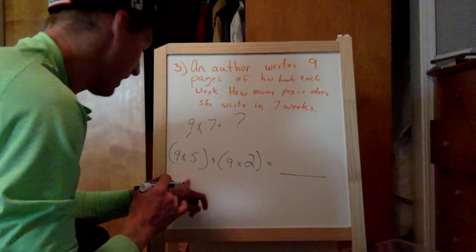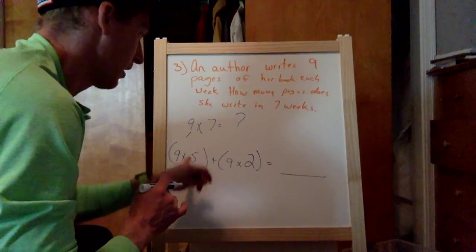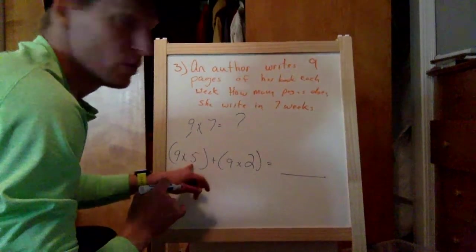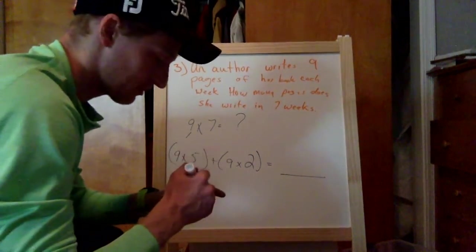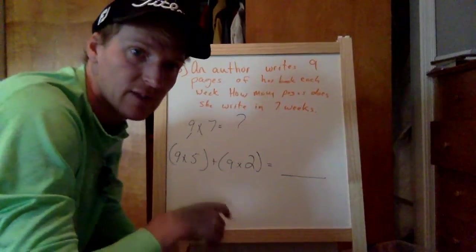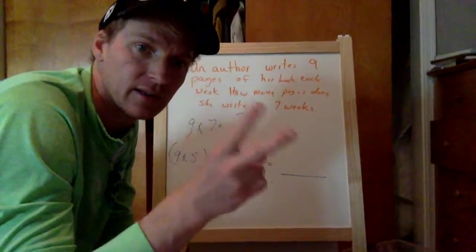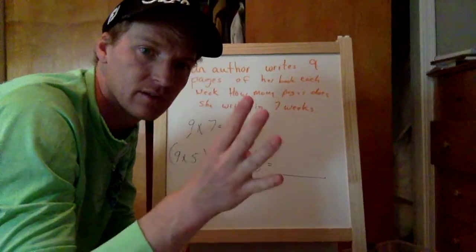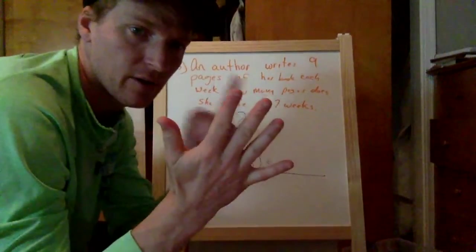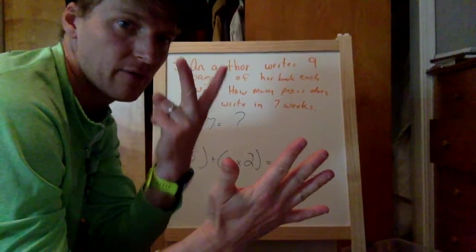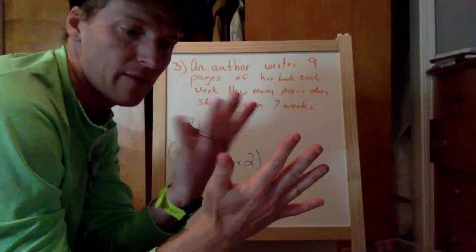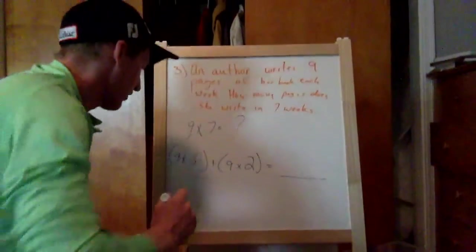Now, we may not know our sevens and our nines, but we do know our fives. So what's nine times five? Let's count by fives nine times. Five, ten, fifteen, twenty, twenty-five, thirty, thirty-five, forty, forty-five. So we have forty-five here.